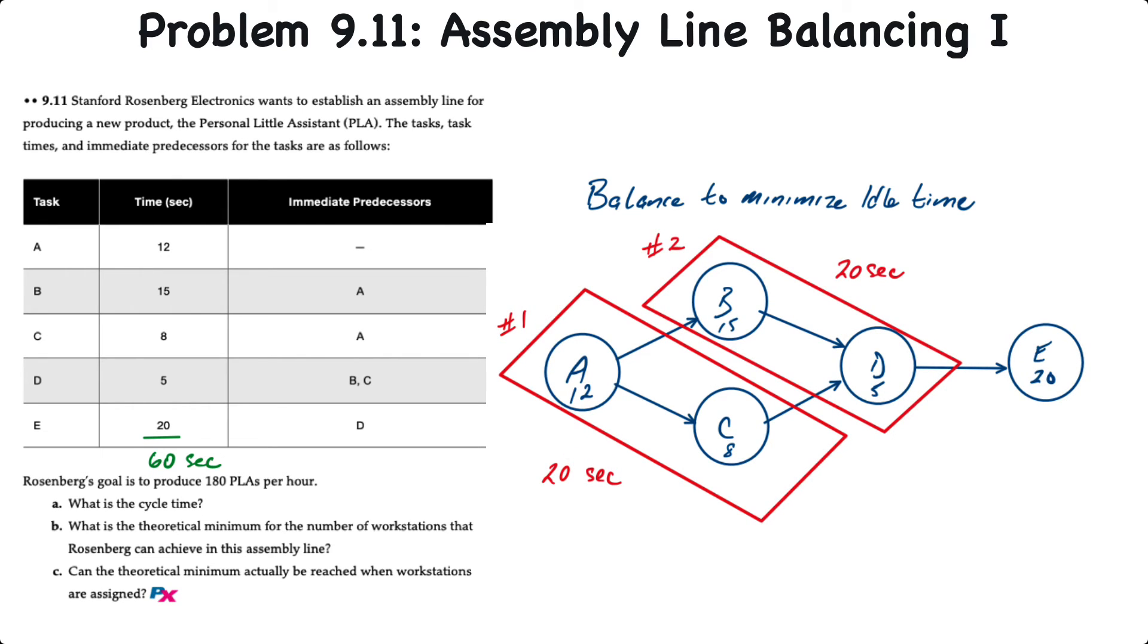Then we'll look at the remaining tasks, and we can see that tasks B and D also add up to 20 seconds, and they're in close proximity, so it would make sense to put them together as well. So that's what we'll do. We'll combine tasks B and D into a second workstation for a total workstation time of 20 seconds. And again, since that's equal to the cycle time, there is no idle time. And then finally that leaves task E, which is already at 20 seconds, and it can't be combined with anything else. So that will be a workstation on its own with a time of 20 seconds.